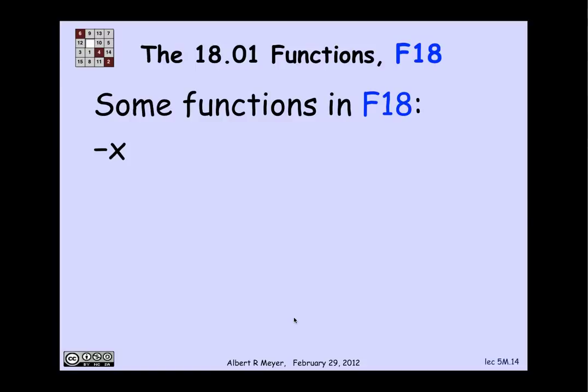Let's look at how this definition works. I claim that, in fact, the function minus x is in F18. How do I build up minus x from the rules? Well, minus 1 is a constant function. So I have that. And x is just the identity function. And I can multiply two functions that I have. So if I multiply minus 1 times x, guess what? I got minus x. So I've just figured out that that function is in F18.